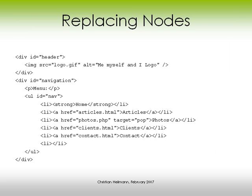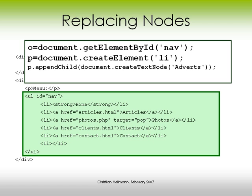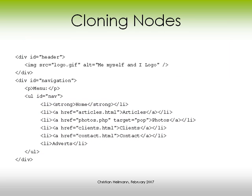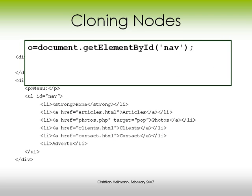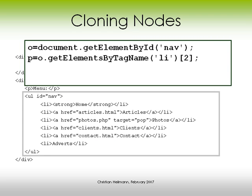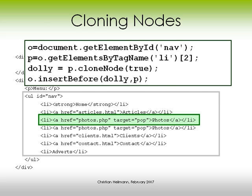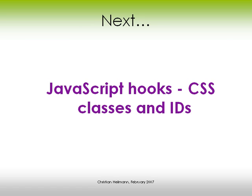You can replace nodes by calling getElementById('nav'), creating a new li element, appending a text node 'adverts' to it, and then calling replaceChild to replace the lastChild with that new one — changing that empty li to the 'adverts' li. Finally, for cloning nodes, you get the node you want (in this case 'photos'), clone it with cloneNode(true) — which also clones the anchor and text node inside — and then insert it before itself, copying both. And that's everything you need to know about the DOM to get started.